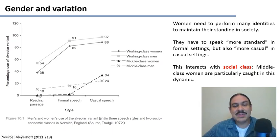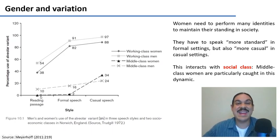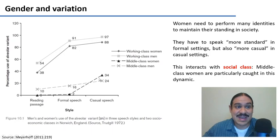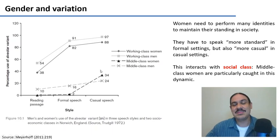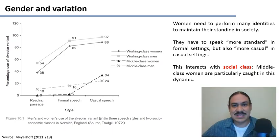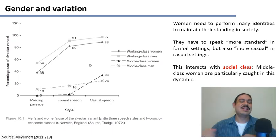When women are expected to speak standard, they have to be even more standard; when expected to be casual, they have to be even more casual — which explains this crossover pattern. Middle class women have 0% of 'workin'' with the alveolar in formal contexts, but in casual contexts they use even more of the alveolar variant than middle class men. So your gender identity is also a source of linguistic variation.